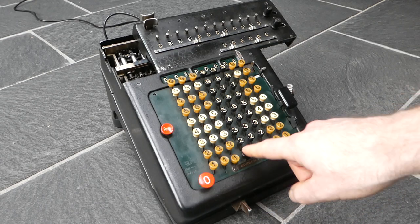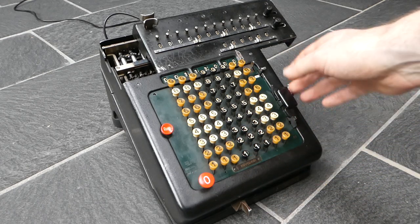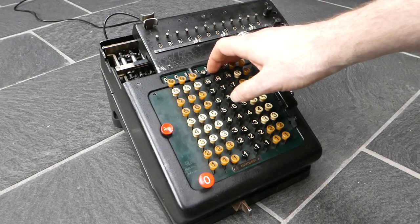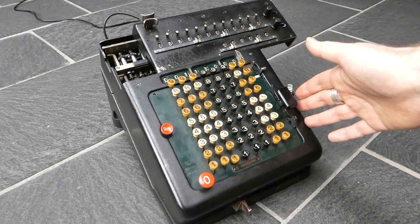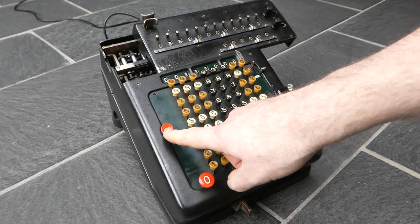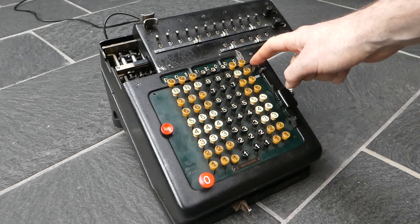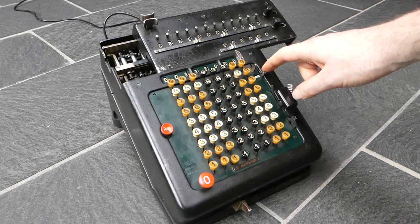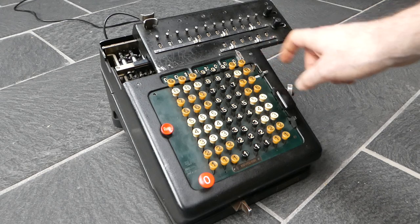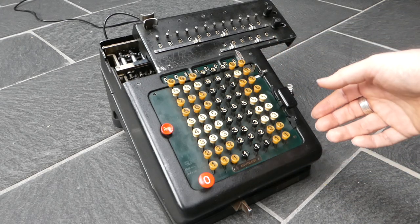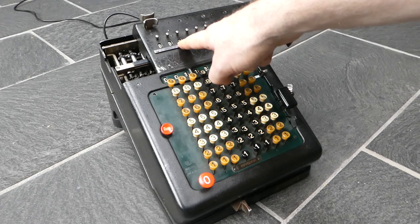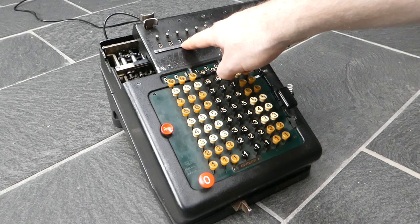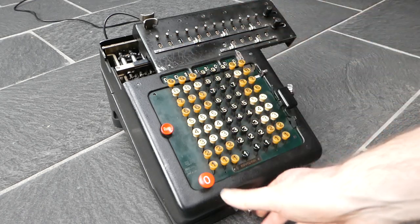And now I'll enter the divisor. So I'll do the usual division of 355 divided by 113, the approximation to pi. So you have to make sure to have the repeat on, switch this to subtraction, and set this switch to division, and then press the motor button. And what that does is it repeatedly subtracts until the register underflows. Then you have to press the correction button to undo that last subtraction, and shift the carriage.